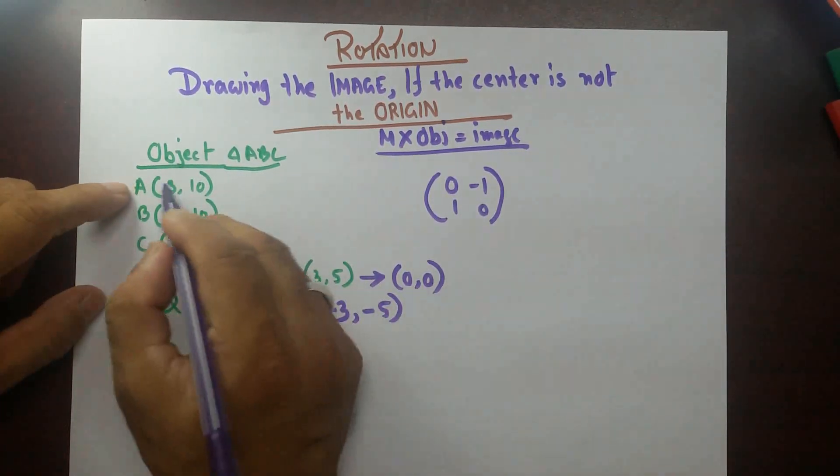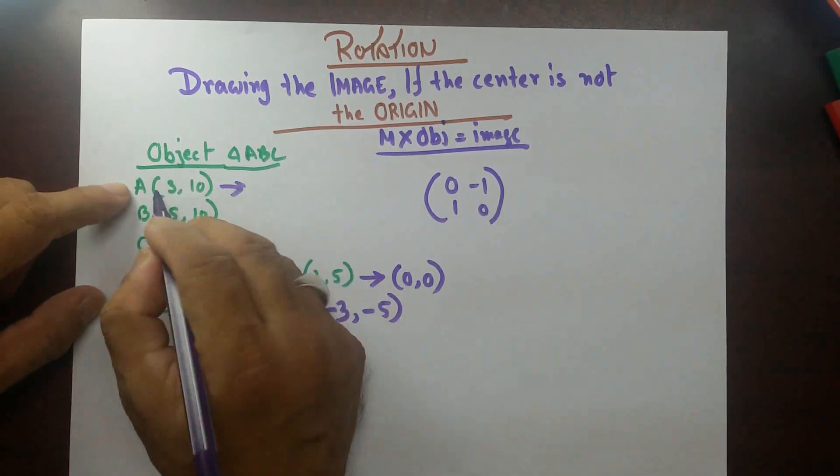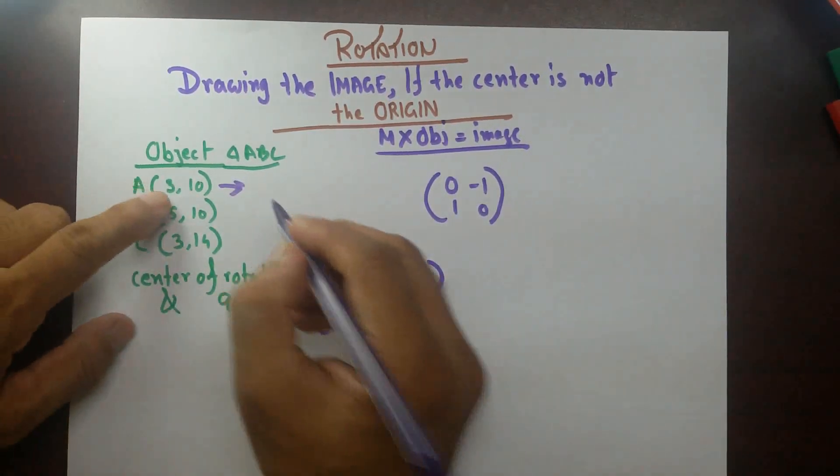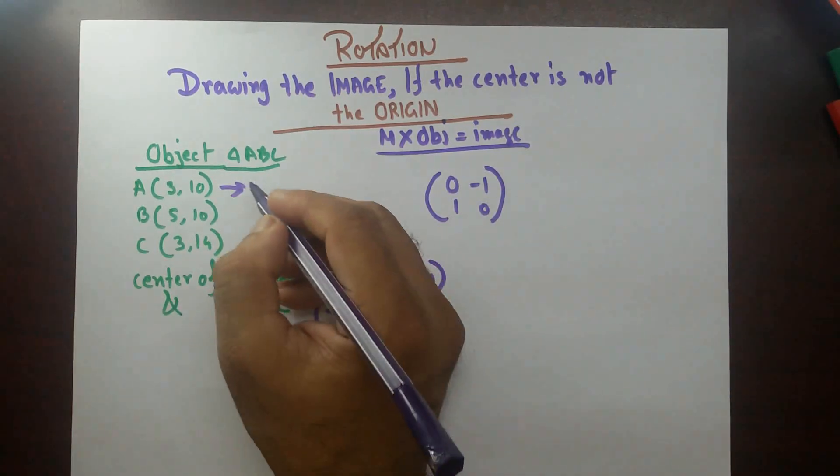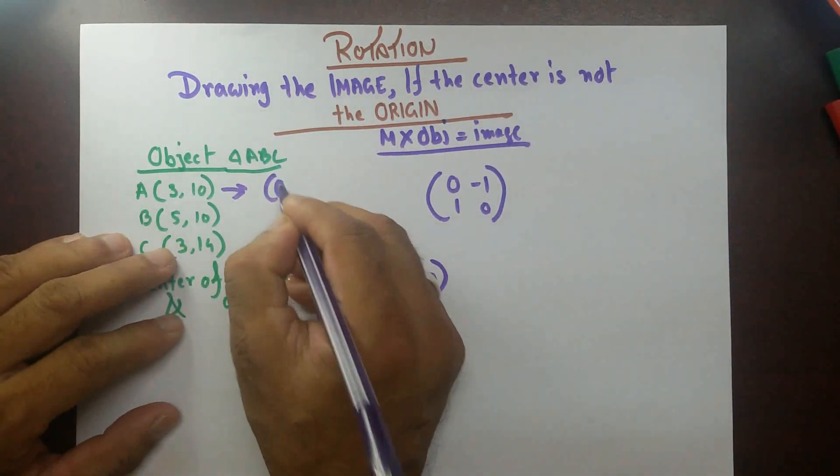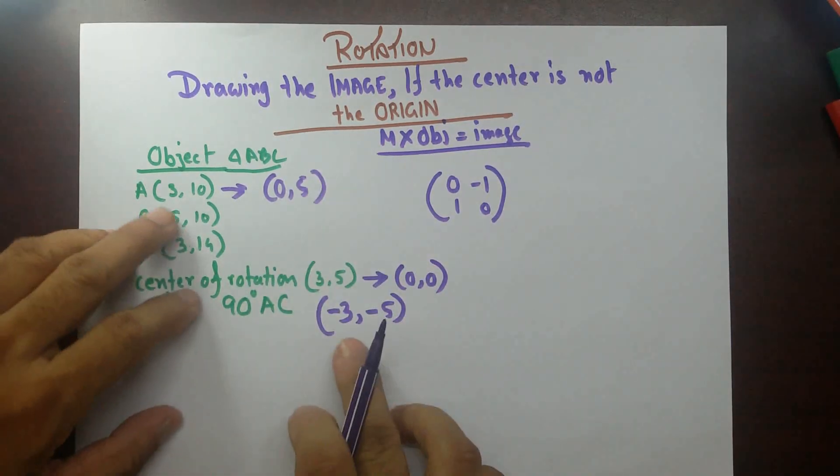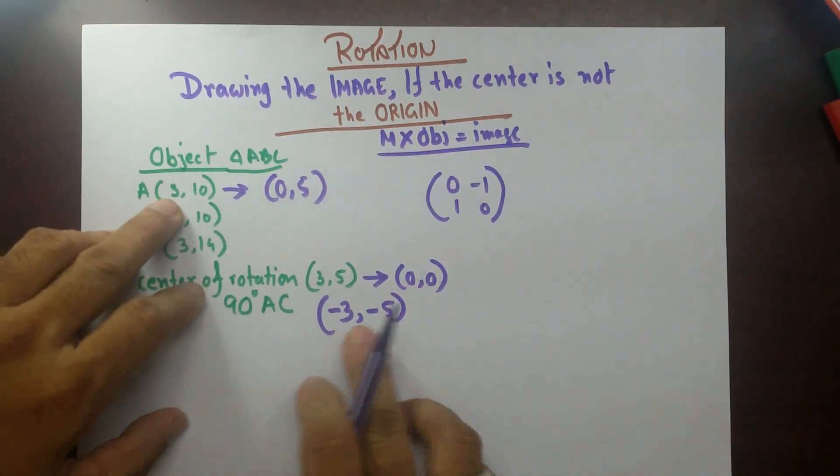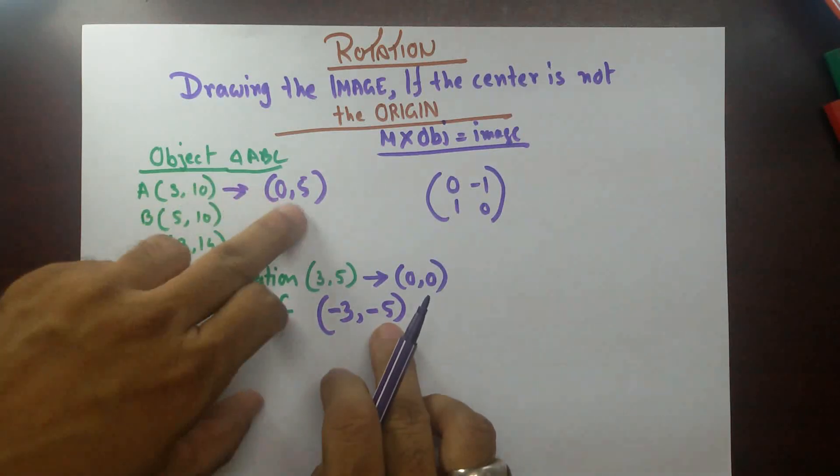So, I need the new coordinates. This A will become, when I subtract minus 3 from here and 5 from here, then this new A would be 0,5. You can see that, minus 3 from 3, so 0, 10 minus 5 is 5.